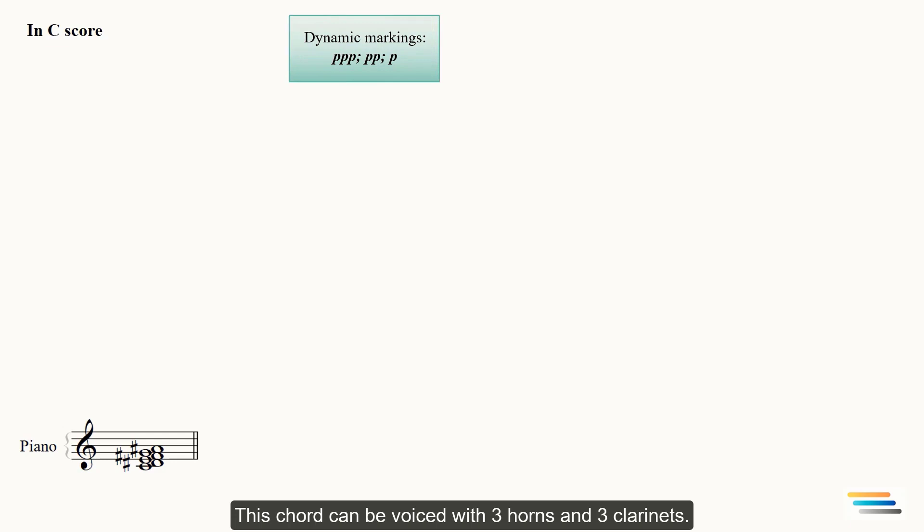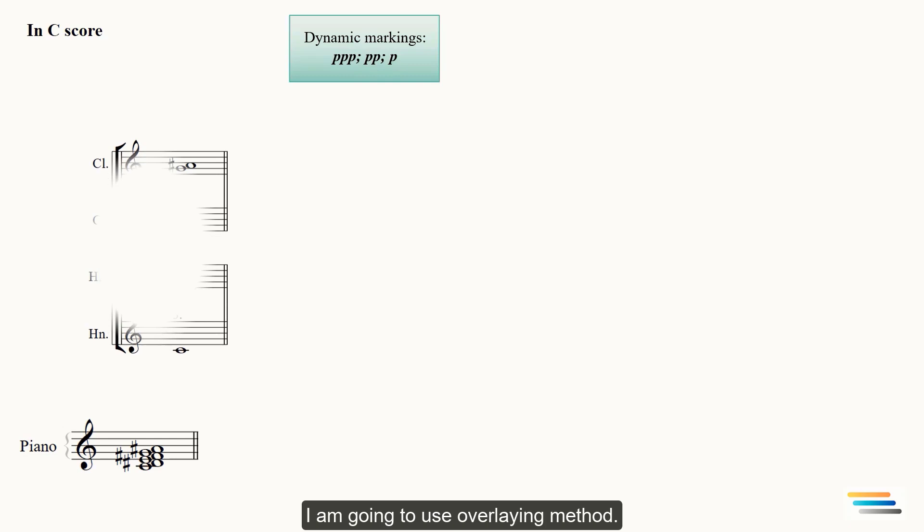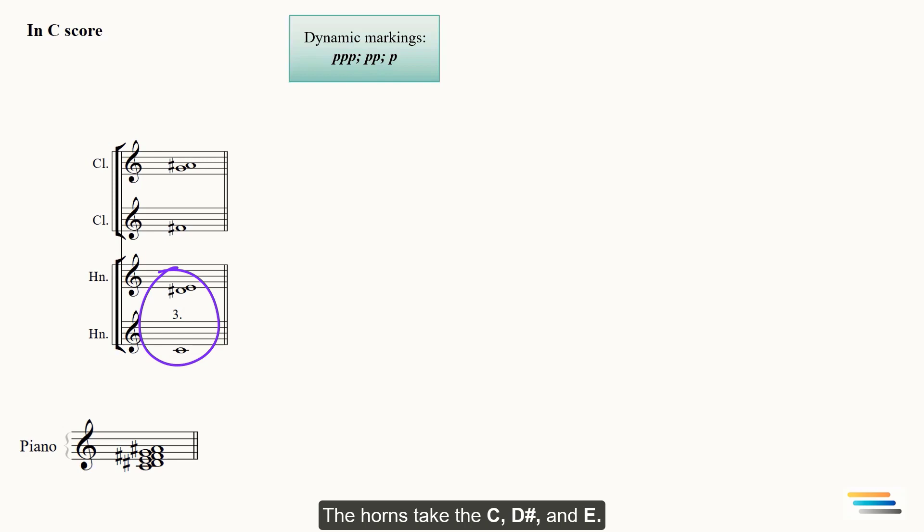This chord can be voiced with three horns and three clarinets. I'm going to use overlaying method. The horns take the C, D sharp, and the E. The F sharp, G, and the A sharp will be played by three clarinets. Is this effective voicing? Of course not. There is undesirable tension between the instruments because of the second intervals. The overlaying is a less effective method. You can find the best voicing than this one.